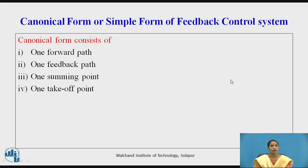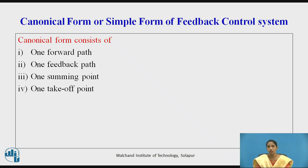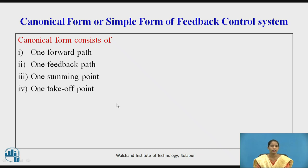Any feedback or control system can be simplified by converting a complicated block diagram into simple canonical form. The canonical form, also called standard feedback form, is a loop consisting of one forward path, one feedback path, one summing point, and one takeoff point. A system with N number of blocks is reduced to a single block with one feedback, one forward path, one summing point, and one takeoff point — that is known as the canonical form or feedback control system.